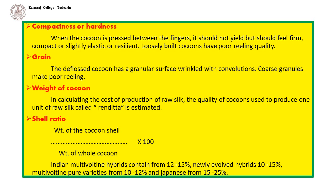Grain or wrinkle: Silkworms produce an unreliable outer layer of silk over the cocoon called floss, which must be removed for further processing. Cocoons with the floss removed are called deflossed cocoons. Deflossed cocoons have a granular surface wrinkled with convolutions. Coarse granules make for poor reeling.